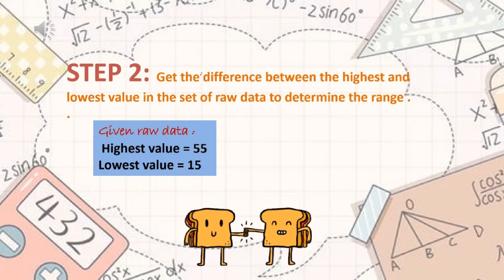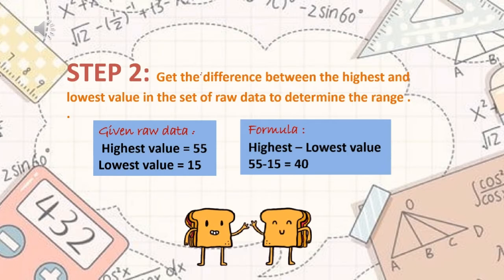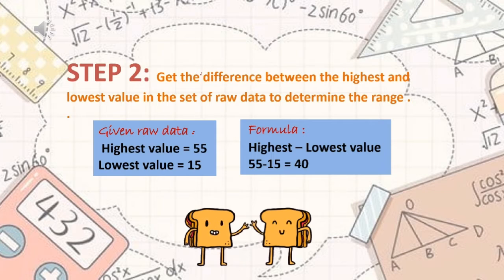Step 2 is to get the difference between the highest and lowest value in the set of raw data to determine the range. We have here our given raw data. Our highest value is 55 and the lowest is 15. The formula is highest value minus lowest value. To substitute: 55 minus 15 equals 40. Therefore, our range is 40.